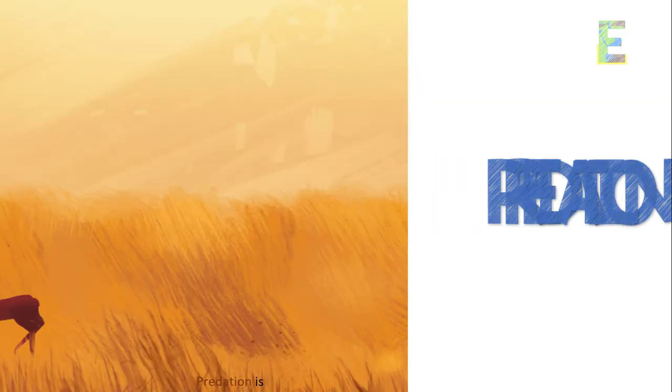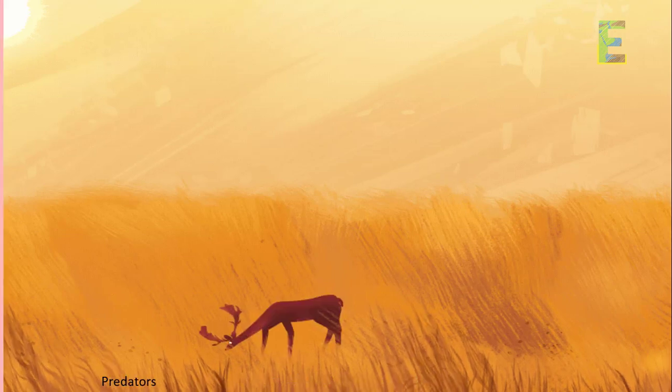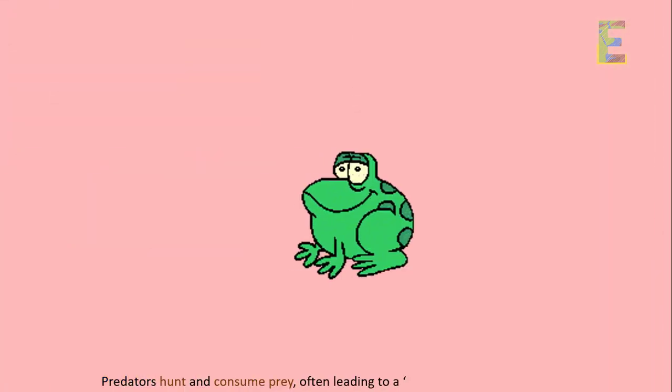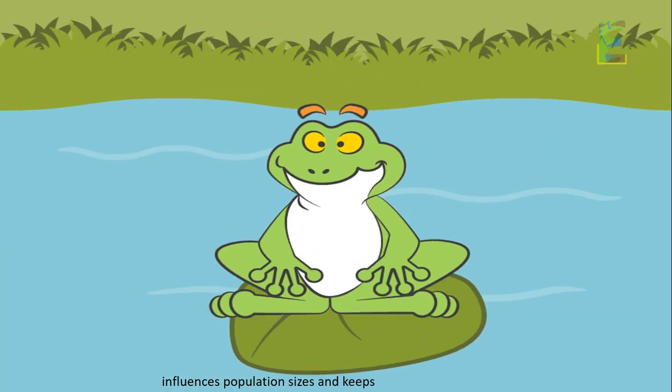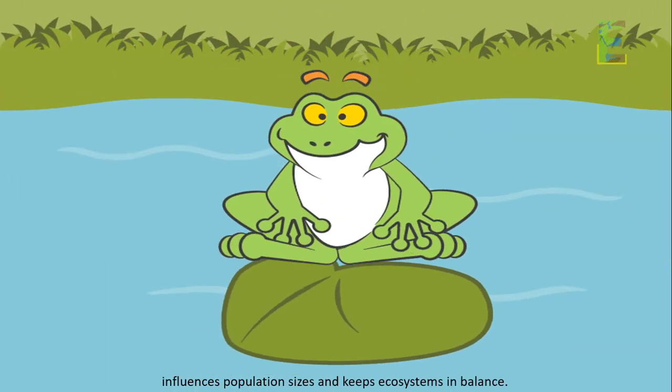Predation. Predation is another non-symbiotic relationship. Predators hunt and consume prey, often leading to a prey-predator dynamic that influences population sizes and keeps ecosystems in balance.